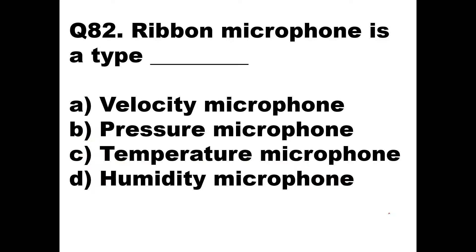A ribbon microphone is a type of what? Options are velocity microphone, pressure microphone, temperature microphone and humidity microphone. In a ribbon microphone, a thin aluminium will be placed between a magnetic field. As the sound hits it, it will move to and fro and that movement will give you a change in electric current. That sound movement is the velocity movement, and that is why it is called a velocity microphone.